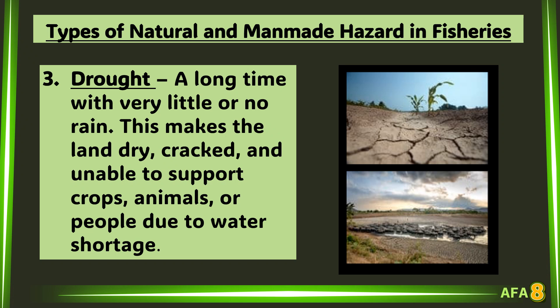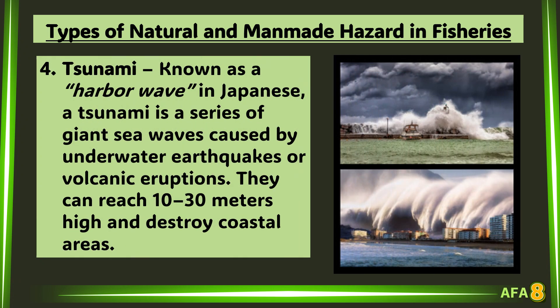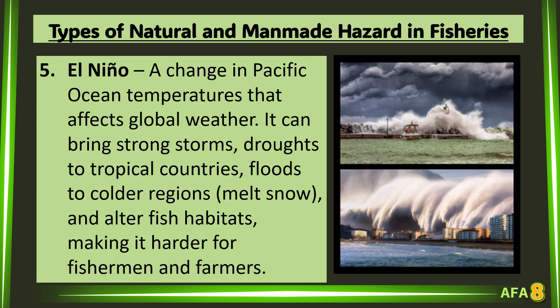4. Tsunami: known as a 'harbor wave' in Japanese, a tsunami is a series of giant sea waves caused by underwater earthquakes or volcanic eruptions. They can reach 10 to 30 meters high and destroy coastal areas. 5. El Niño: a change in Pacific Ocean temperatures that affects global weather. It can bring strong storms, droughts to tropical countries, floods to colder regions, and alter fish habitats, making it harder for fishermen and farmers.